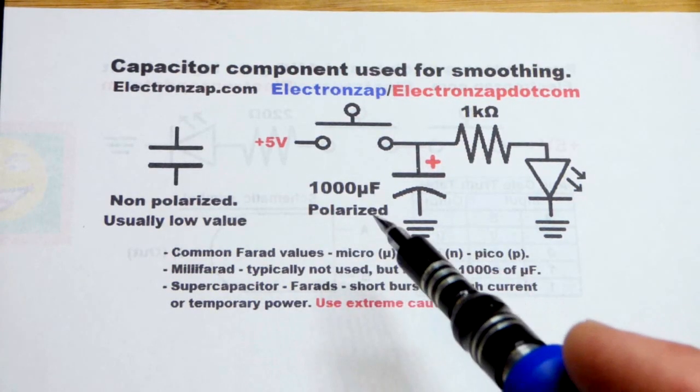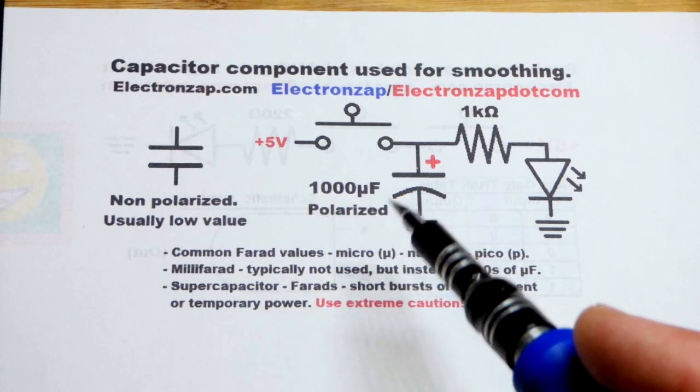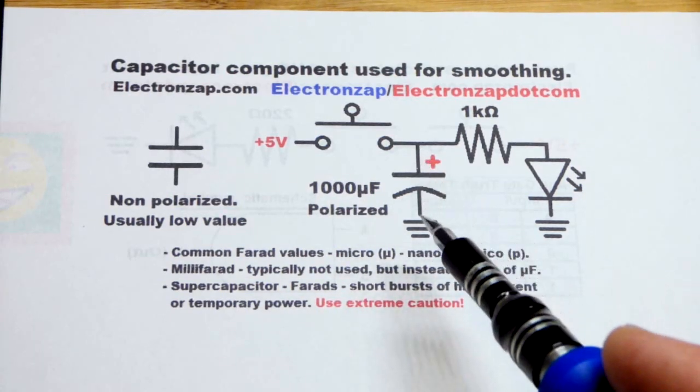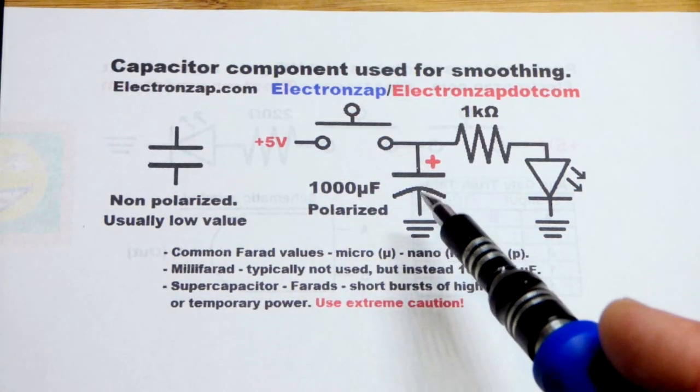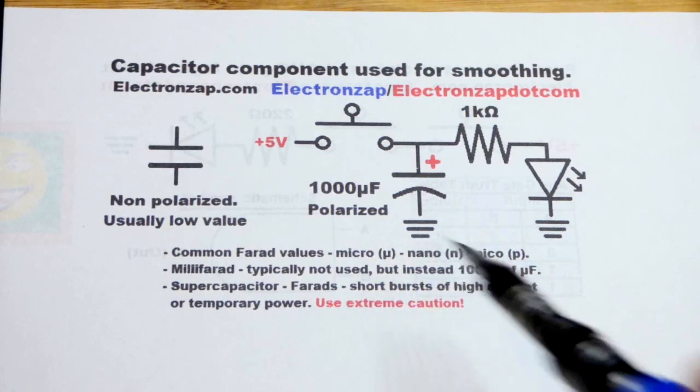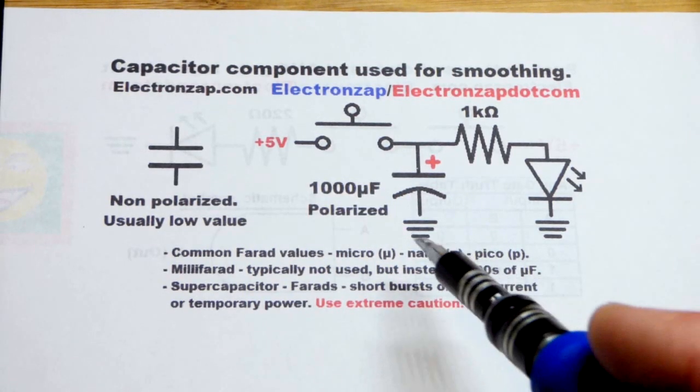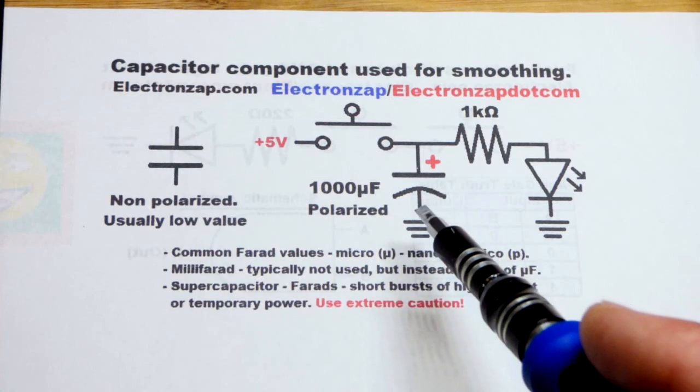So the polarized capacitors are the larger value capacitors. You have to insert them in the correct direction. The negative side of it has to be more negative. They're usually marked pretty definitively.